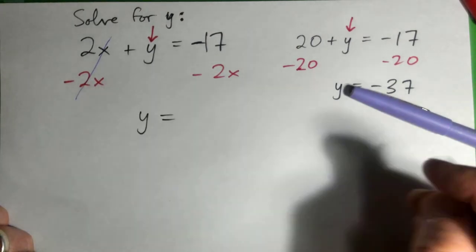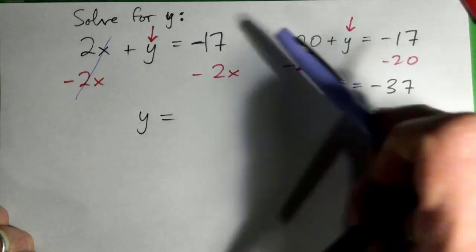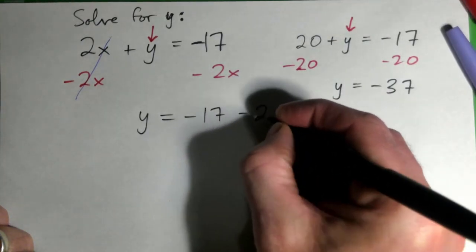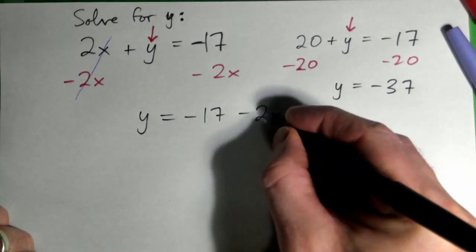And now you have y equals, and these are not like terms, so all you have to do is just write negative 17 minus 2x, and you're done, that's it, that's the answer.